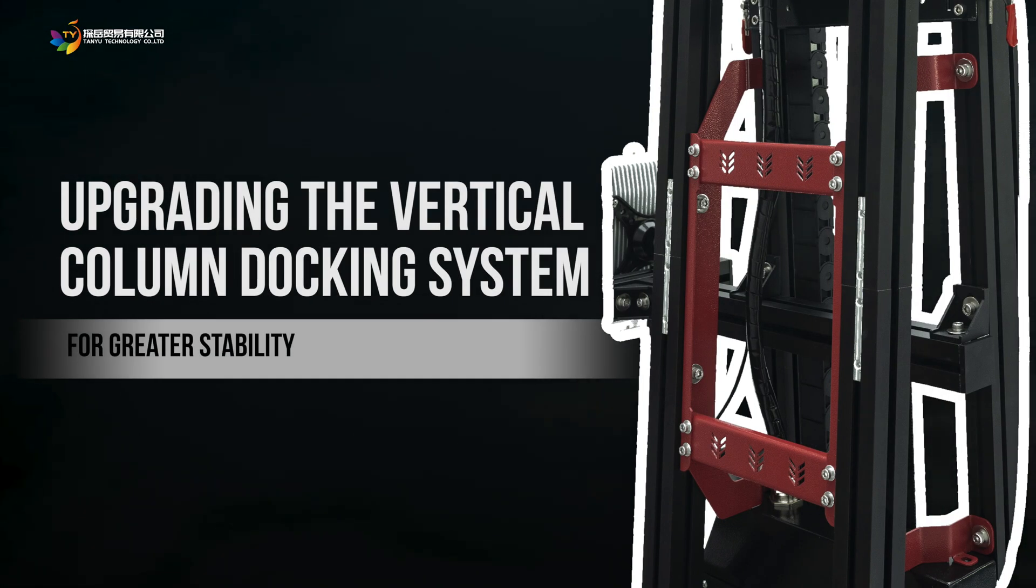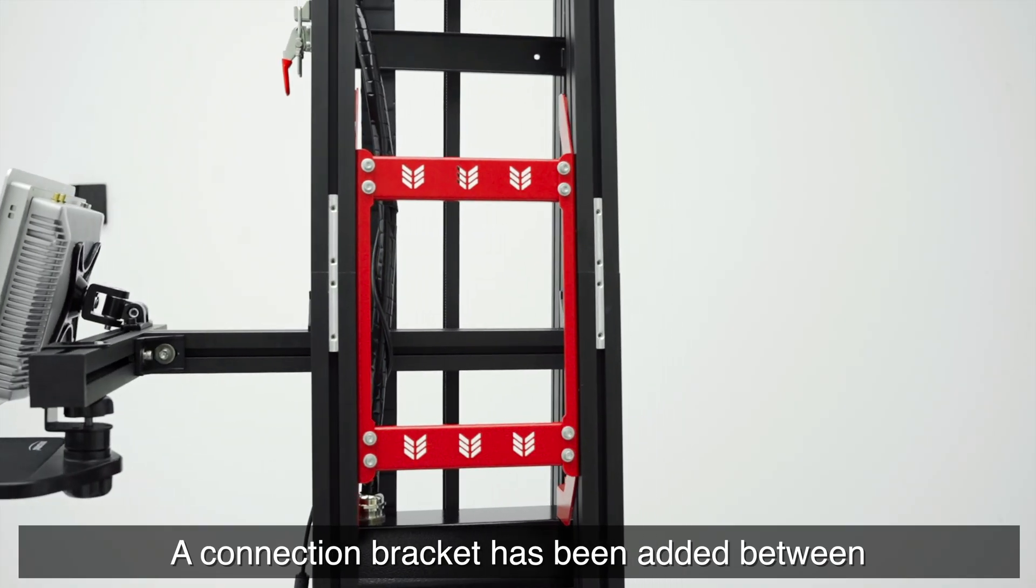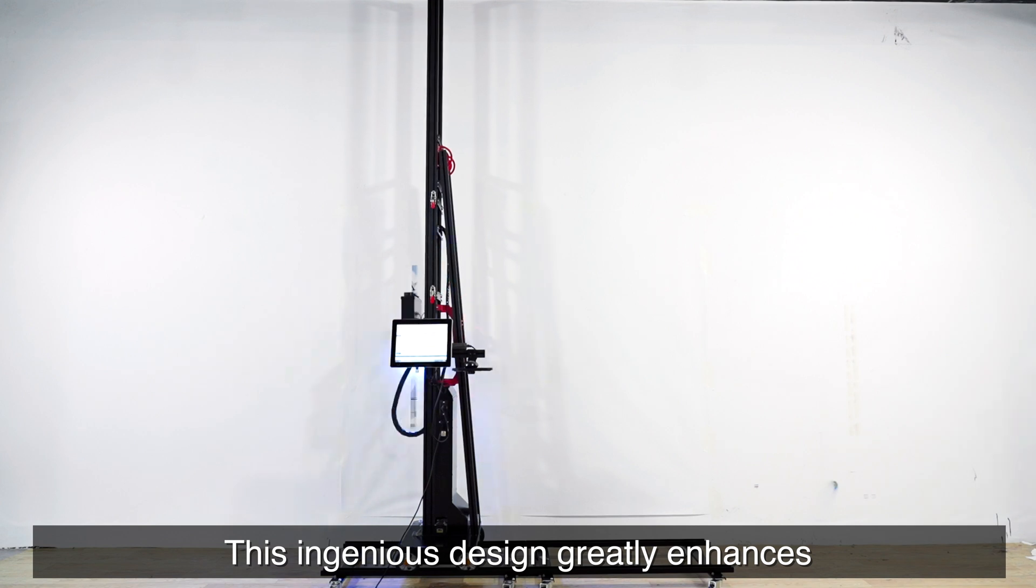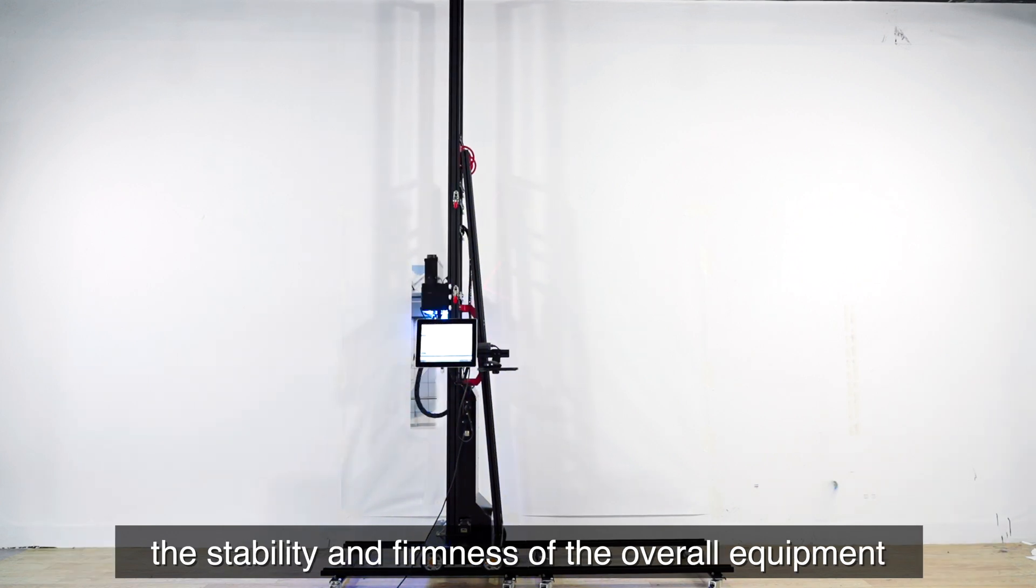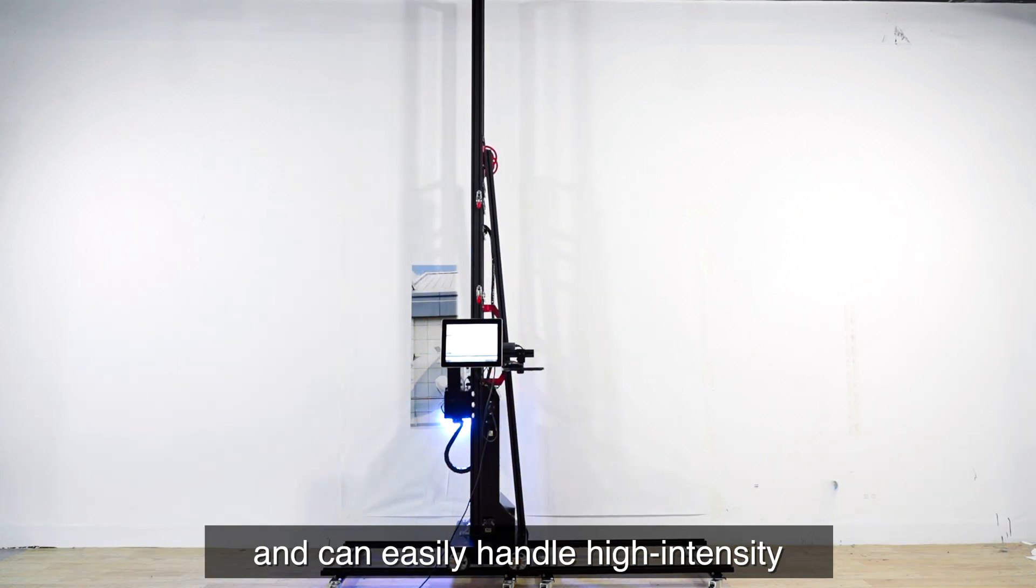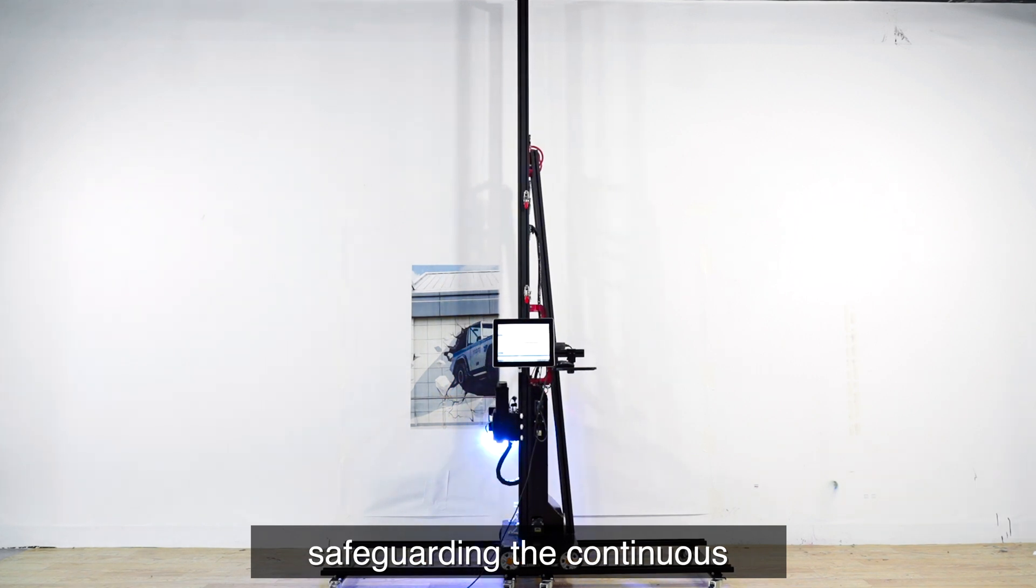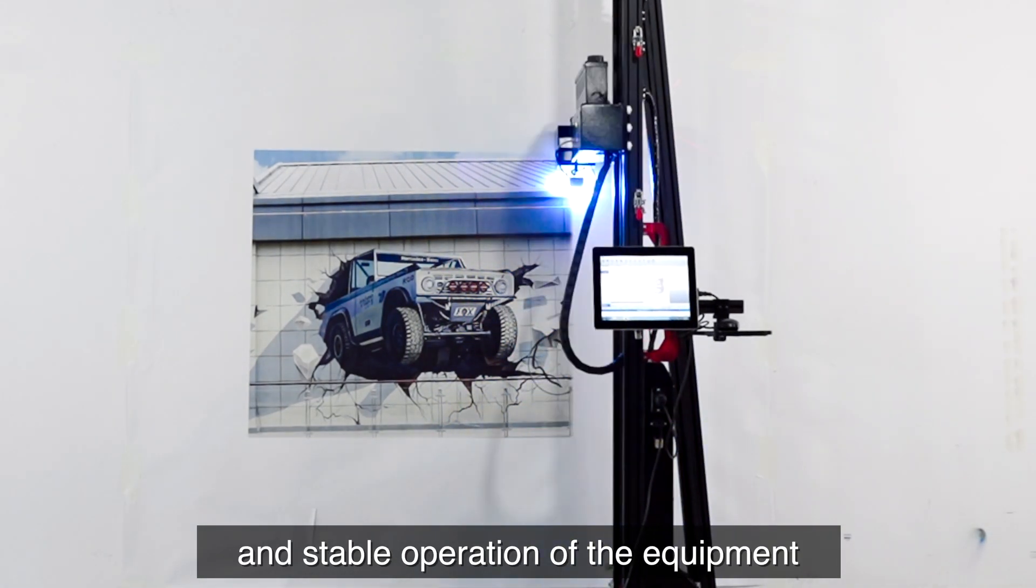Strengthened and Stabilized Connection Bracket. A connection bracket has been added between the inclined support and the main column. This ingenious design greatly enhances the stability and firmness of the overall equipment, and can easily handle high-intensity and long-duration printing tasks, safeguarding the continuous and stable operation of the equipment.